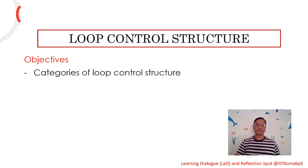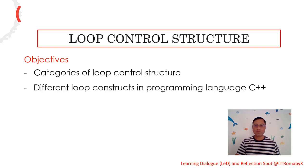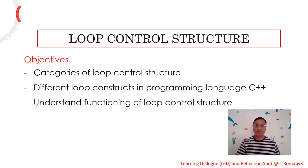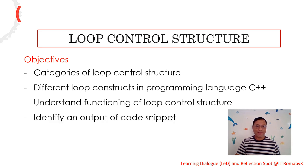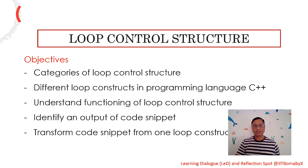The objectives of this discussion are to explain the categories of loop control structure, the different loop constructs in programming language C++, understand the functioning of each loop control structure, identify the output of a code snippet where there is a use of a loop programming concept, and also, for a given strip with one loop construct, how to transform it into another.